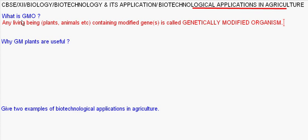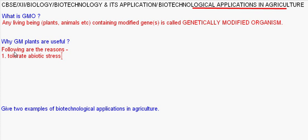Now, why are GM plants, that is genetically modified plants, useful? The following are the reasons. Number one: genetically modified plants can tolerate abiotic stresses — such as drought, low rainfall, higher temperature, etc. — better than normal plants.